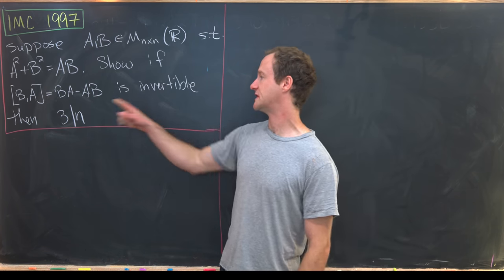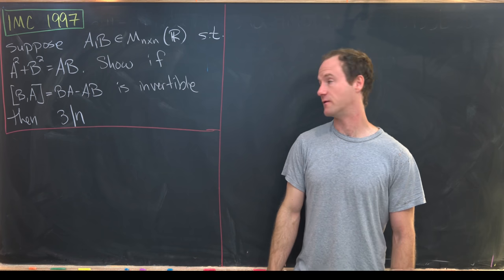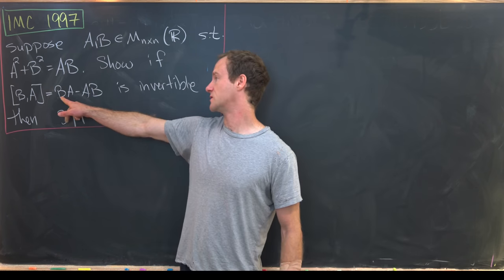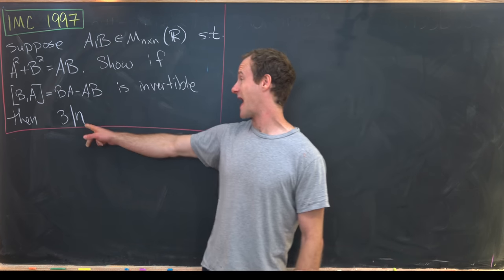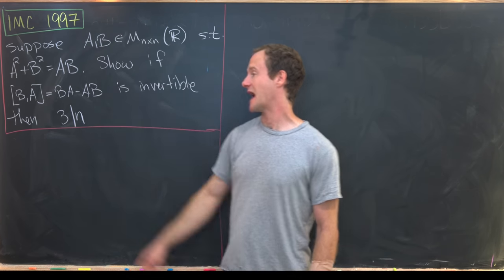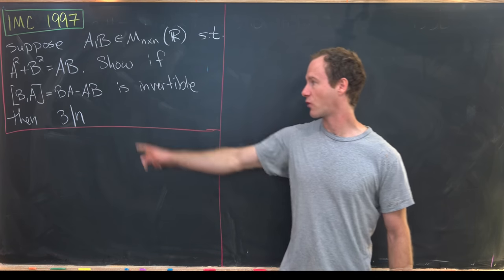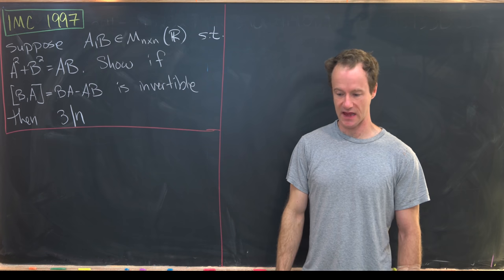And our goal is to show that if the commutator of B and A, in other words BA minus AB, is invertible, then that dimension is actually a multiple of three. In other words, three divides n.